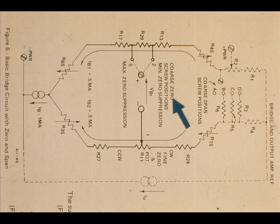This is a schematic of the coarse and fine zero adjustments for one of the available circuit boards. Note that there are only two screw positions for the coarse zero on this board, namely position numbers 2 and 5.